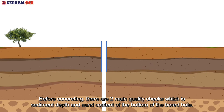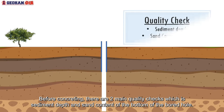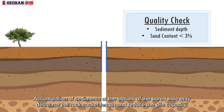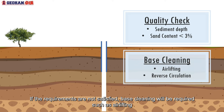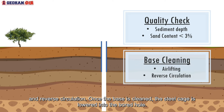Before concreting, there are two main quality checks: sediment depth and sand content at the bottom of the borehole. Accumulation of sediments at the bottom of the borehole may decrease the effective rock socket length and reduce the pile capacity. If the requirements are not satisfied, base cleaning will be required, such as air lifting and reverse circulation.